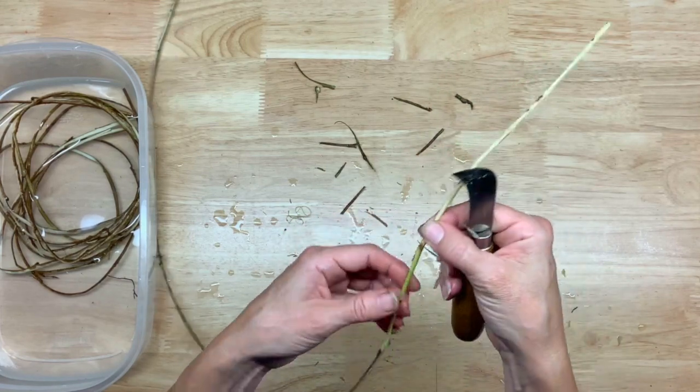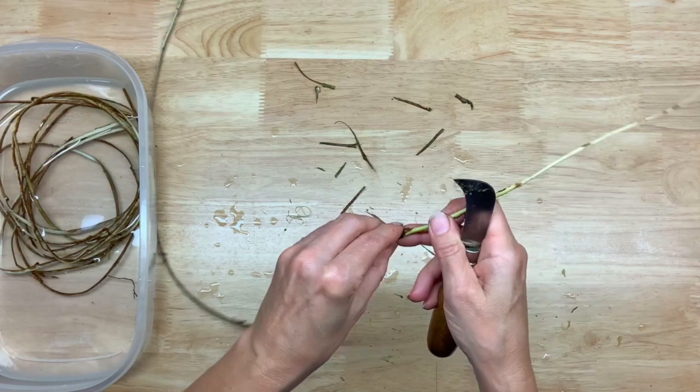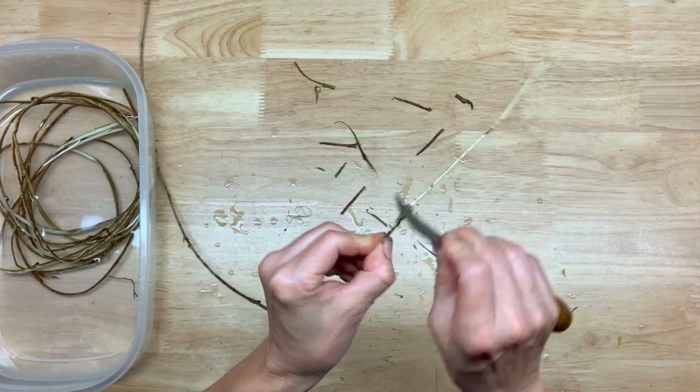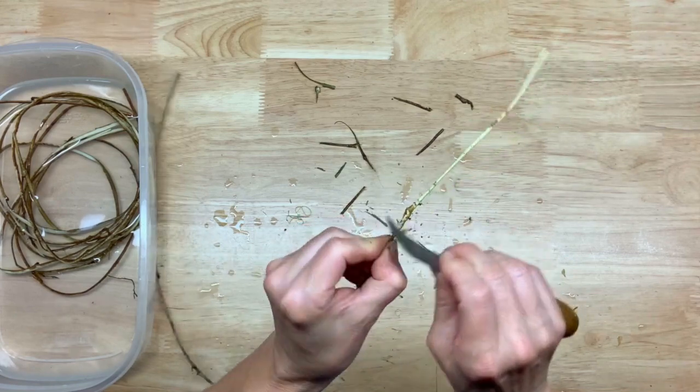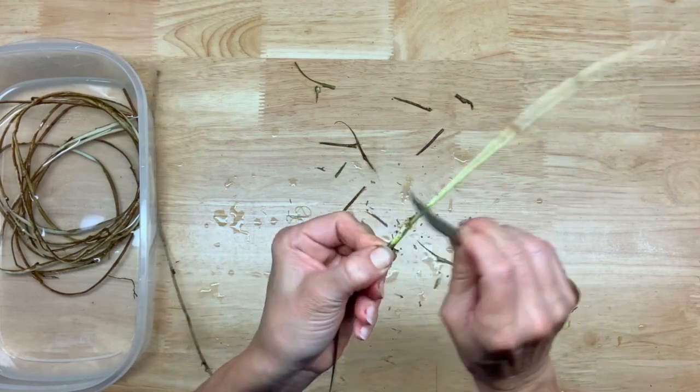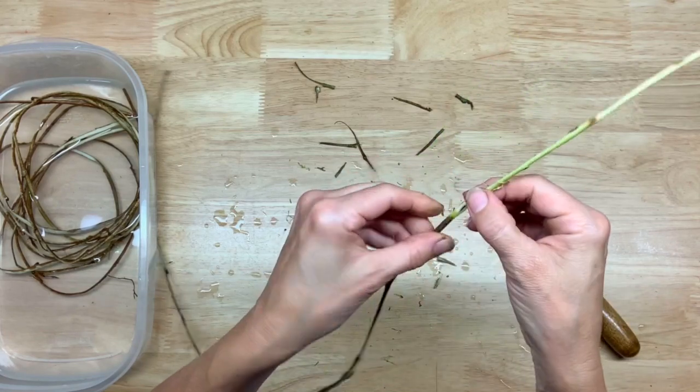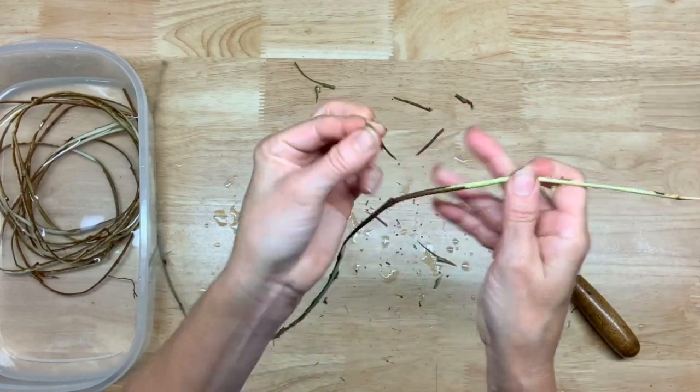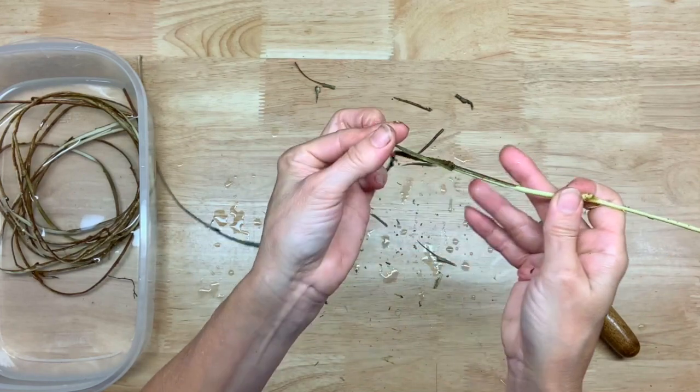The main thing I keep the knife for is if there's any knobby bits where the bark's not peeling off easily. Then I'll just continue popping it off like that, and again it comes off pretty easily.